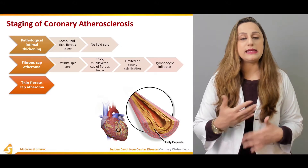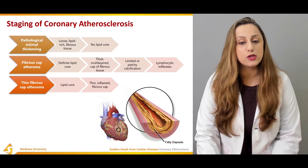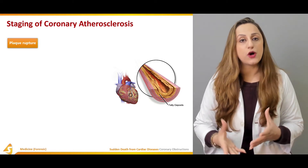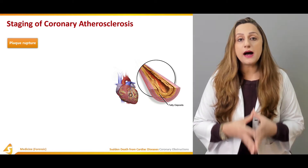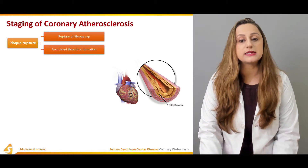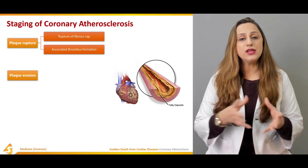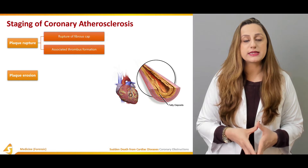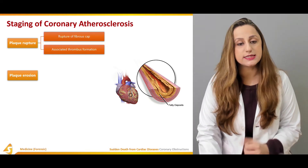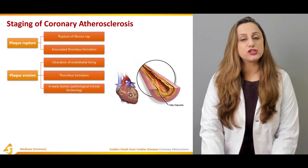The third, even more advanced stage is the thin fibrous cap atheromatous stage, featuring a lipid core with a thin, inflamed fibrous cap. After plaque formation, complications can occur: the fibrous cap can rupture with associated thrombus formation. If plaque erosion occurs on the external surface, ulceration of the endothelial lining takes place, also leading to thrombus formation. In early lesions, pathological intimal thickening occurs.